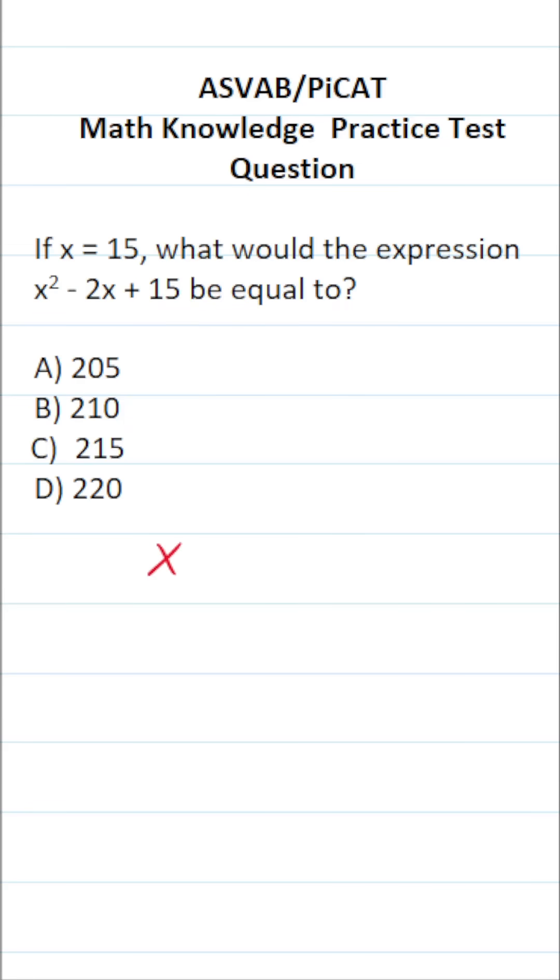In other words, we're going to be evaluating the expression x squared minus 2x plus 15 when x equals 15, which means we're going to take 15 and plug it in everywhere we see x and then evaluate it accordingly. This becomes 15 squared minus 2 times 15 plus 15.